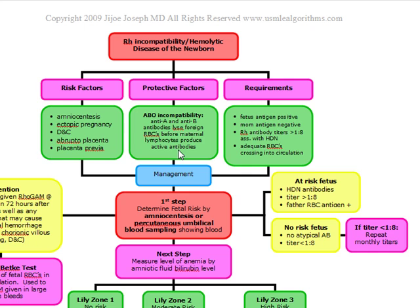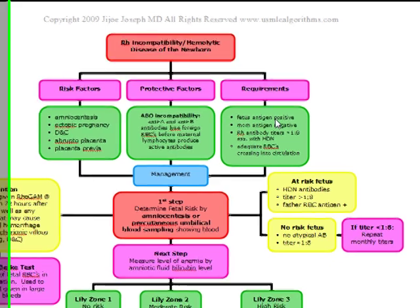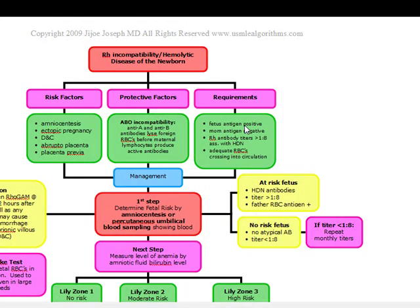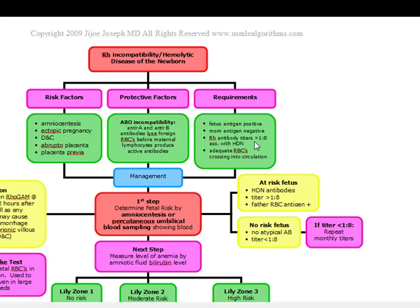Next we'll talk about the requirements of isoimmunization, also known as RH incompatibility. In order to diagnose RH incompatibility, all of the following must be present: the fetus antigen has to be positive, meaning the father must also be antigen positive; the mother's antigen has to be negative; RH antibody titers have to be over a ratio of 1:8; and adequate RBCs have to cross into the circulation to stimulate the mother's lymphocytes to produce antibodies to the fetal RBC antigens.